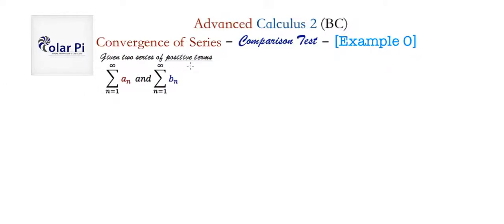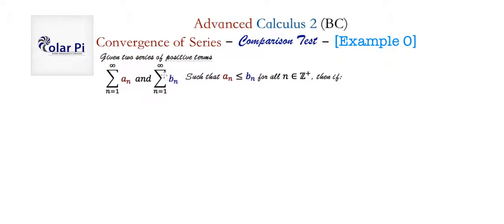This is what it says. Given two series of positive terms — the infinite series with a sub n and the infinite series with b sub n — such that a sub n is less than or equal to b sub n for all n in the positive integers: if the bigger of the two converges, then the smaller of the two converges also. For divergence, it's the other way around — we require that the smaller of the two diverge in order to say that the bigger of the two diverges. The proof will have two directions, one for convergence and the other for divergence.